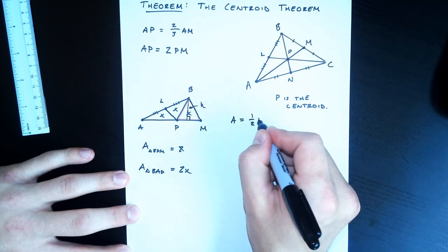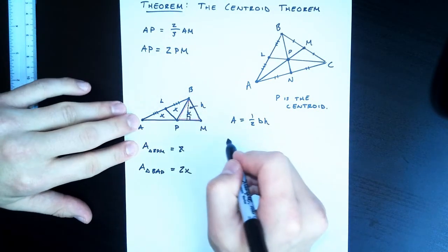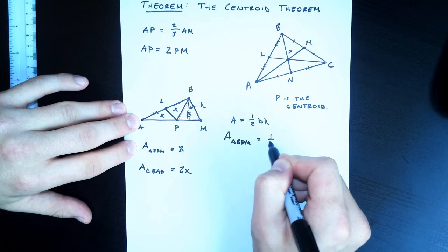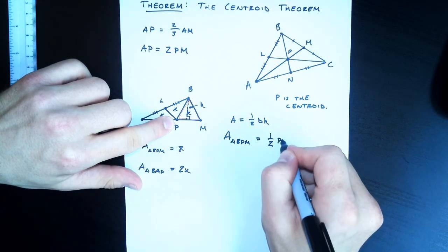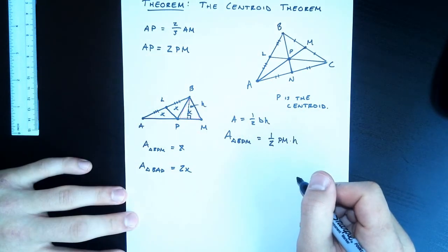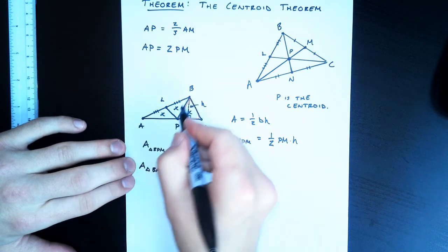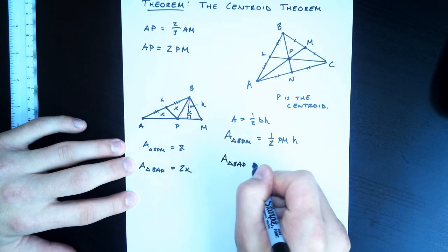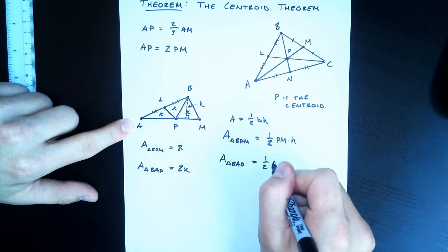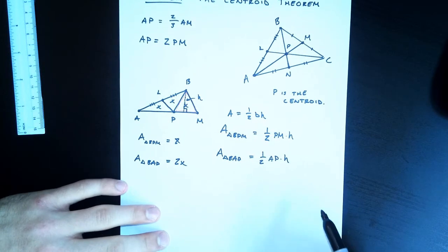In general, the area of a triangle is one-half base times height. So for my first triangle, my smaller one, BPM, the area of triangle BPM is going to be equal to one-half. The base of that triangle is PM, and then the height, the altitude there, is H. And for the second triangle, the bigger one, BAP, that's going to be one-half. The base of this is AP, and the height is the same.